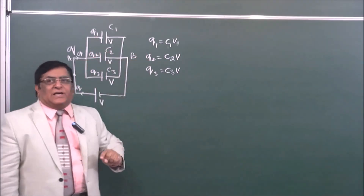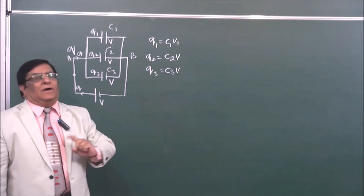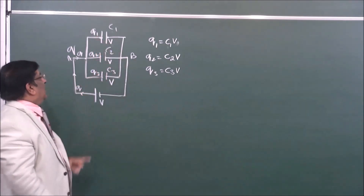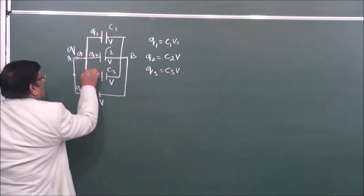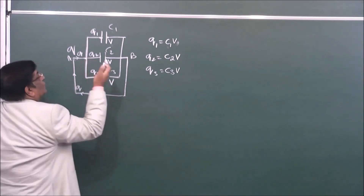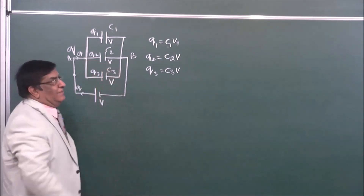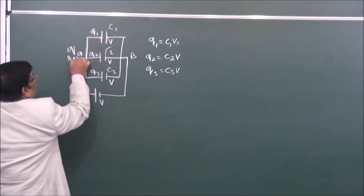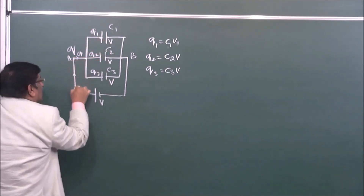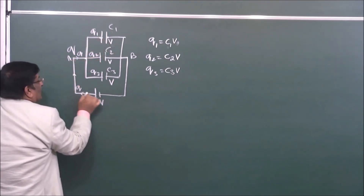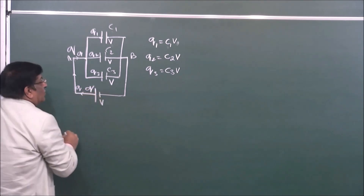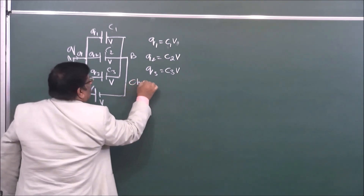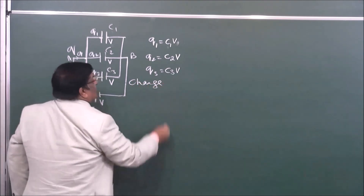By the rule of conservation of charge, the charges Q1, Q2, Q3 have all come from one path. There is no induced charge. Therefore, the battery has created a single total charge Q which is the source for all three — the charge is distributed.